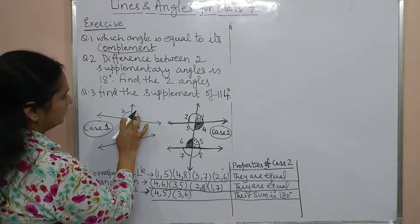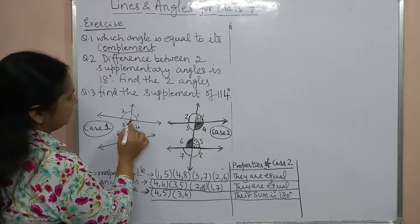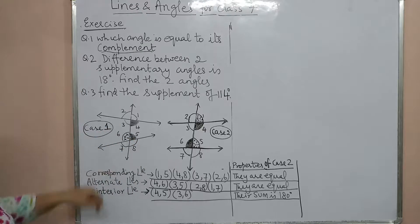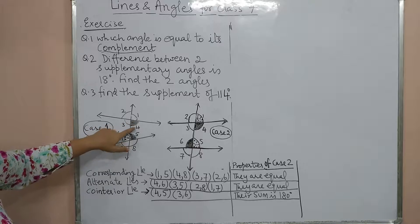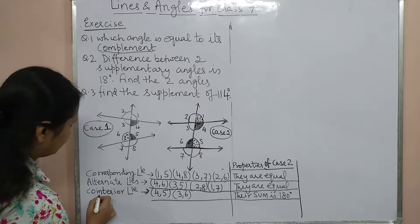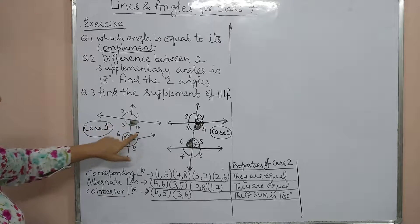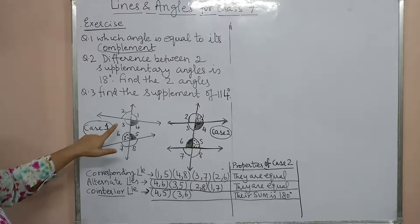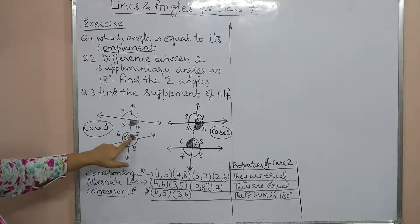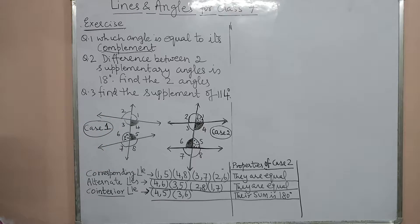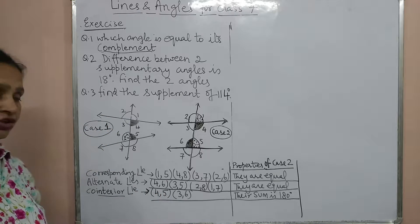Co-interior angles: angle 4 and 5 form one pair, and 3 and 6 form another pair — they are called co-interior angles. The exterior 4 angles are not co-interior. These pairs exist in both cases, but the properties only apply when the lines are parallel.